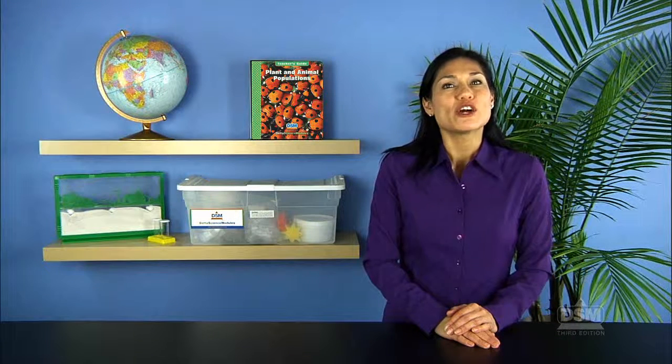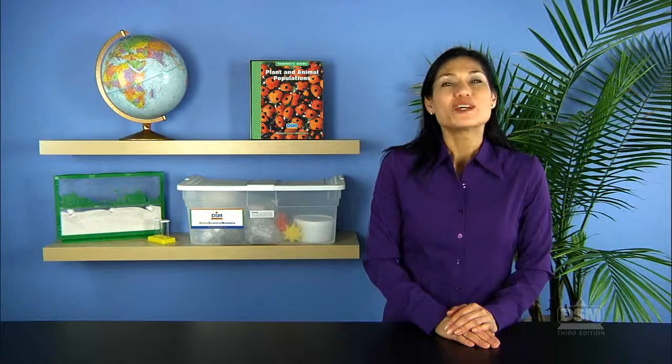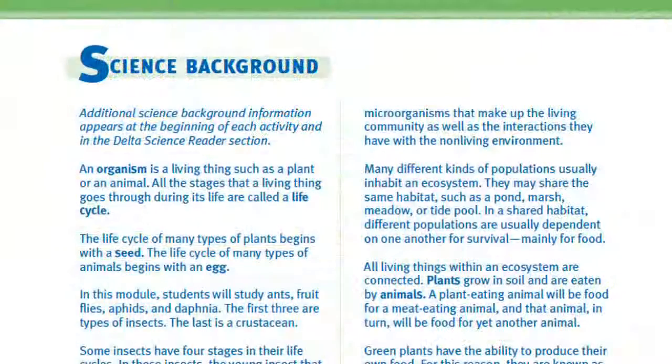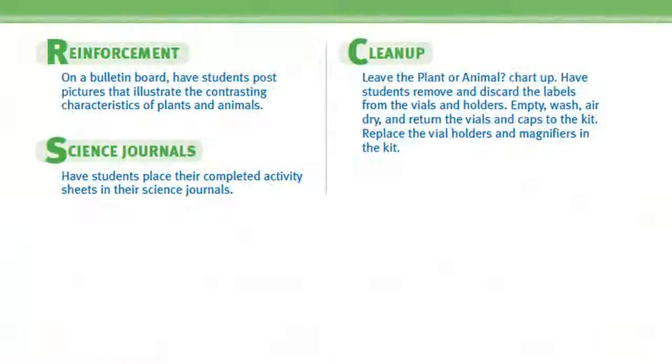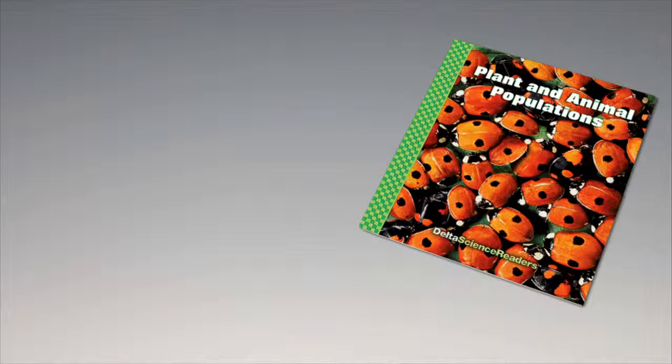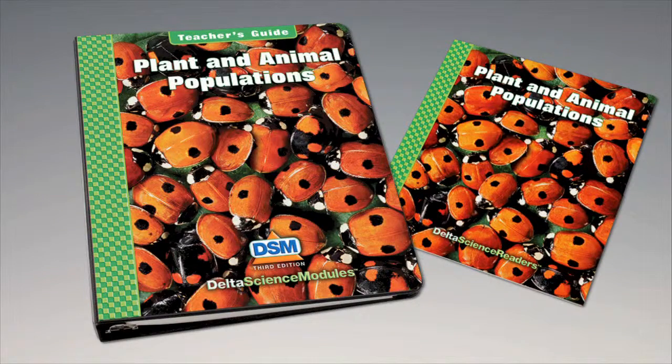Explain that in the wild there are usually more prey than predators. To conclude Session 2, place the daphnia and damselfly nymphs in an aquarium for further observation. Wash and air-dry the materials and replace them in the kit. For science background, reinforcement activities, curriculum connections, and information about the Delta Science Reader, please consult your DSM teacher's guide.